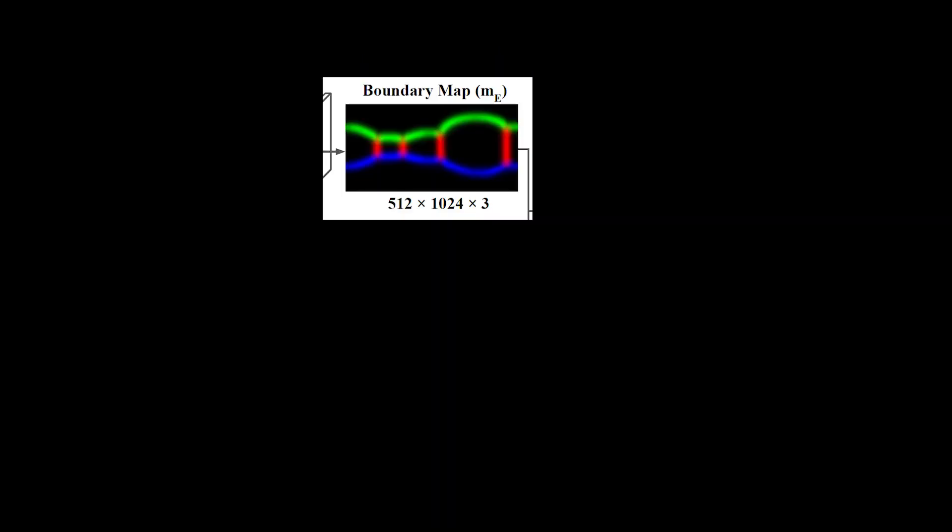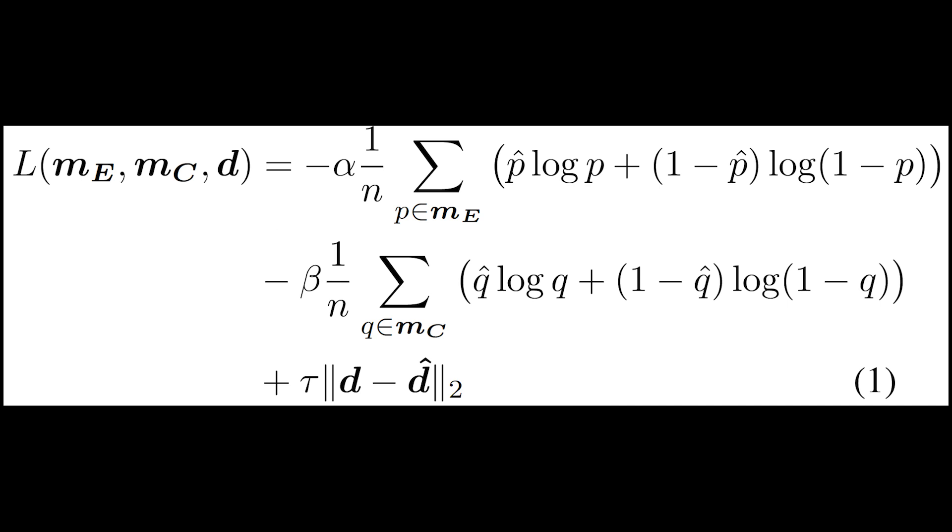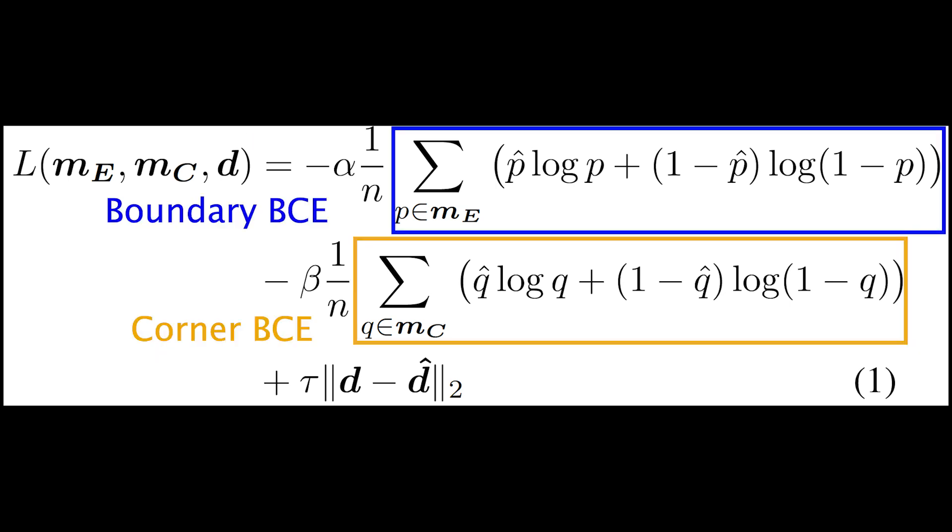Furthermore, the number of output channels for boundary feature map is 3, each of which represents floor-to-wall, wall-to-wall, and ceiling-to-wall boundaries. The last component, the 3D layout parameter regressor, takes into account six parameters: width, length, height, translation x and y, and rotation. However, this regressor is too difficult to train, so the purpose of including it in the network is only for better predictions of corners and boundaries, rather than for its own sake. The network's loss function is its formula. ME and NC denote the output feature maps for boundaries and corners, where D represents the vector of the 3D layout parameters. So the first two terms are the binary cross-entropy for the boundaries and the corners, and the last term is the mean square error of the 3D parameter vector.